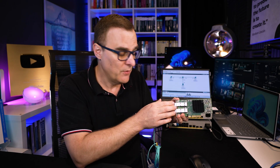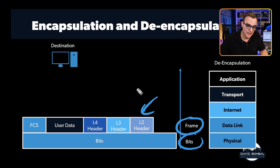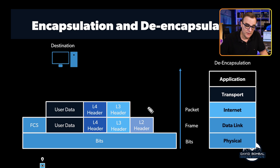The network interface card needs to read the destination MAC address and see if the frame is destined for itself. It will then strip off the layer two header and send it to the upper layers — in other words, to the operating system or computer. The NIC receives the frame with the layer two header containing the destination MAC address. It determines whether the frame is meant for this device or someone else. If it's for the local device, it processes it, strips the layer two header, and sends it to the next layer.